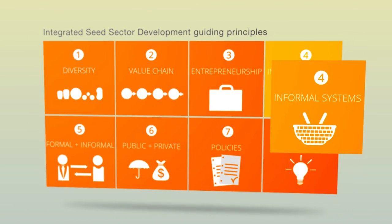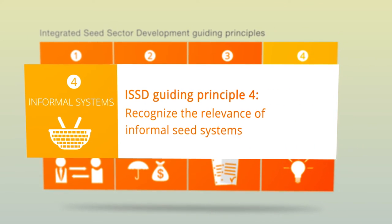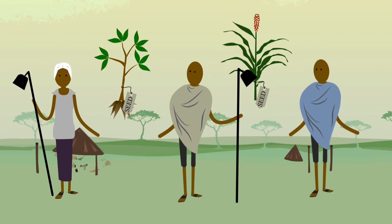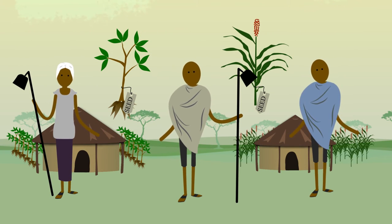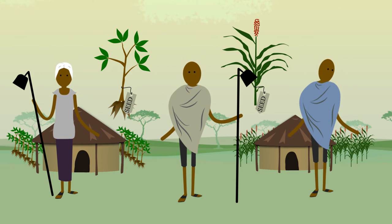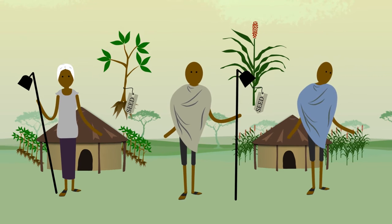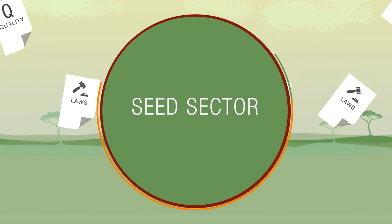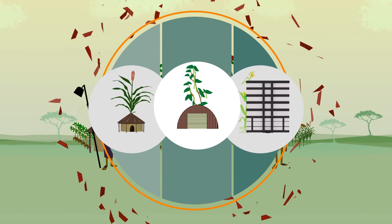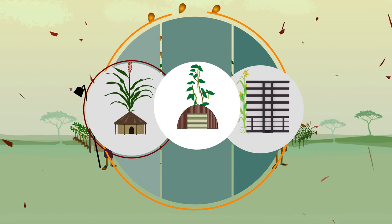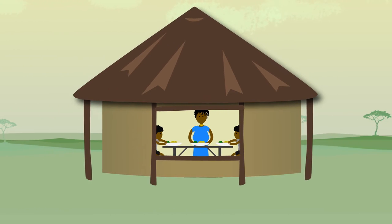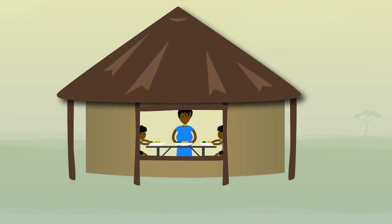ISSD Guiding Principle 4: Recognise the relevance of informal seed systems. For many locally important food crops, informal seed systems are the main providers of seed. For these crops it's often the only source and option. Instead of trying to formalise informal seed systems, ISSD tries to strengthen the systems themselves. ISSD recognises the value of informal seed systems in providing smallholder farmers with seed and food security.